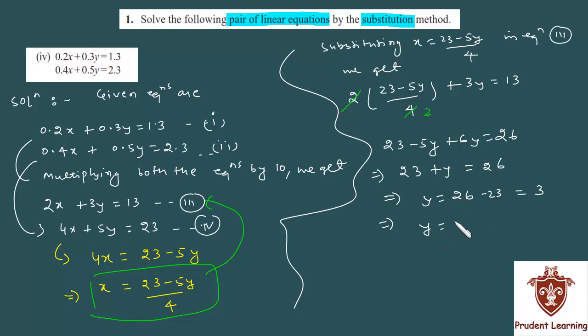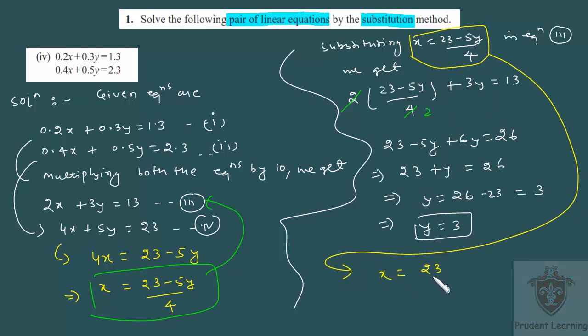So you've found the value of y as 3. You can substitute this y value to find x. Substituting here, you will get x as 23 minus 5 times 3 over 4. This gives us 23 minus 15 upon 4, which gives us x as 8 over 4, which is 2. So x is 2.